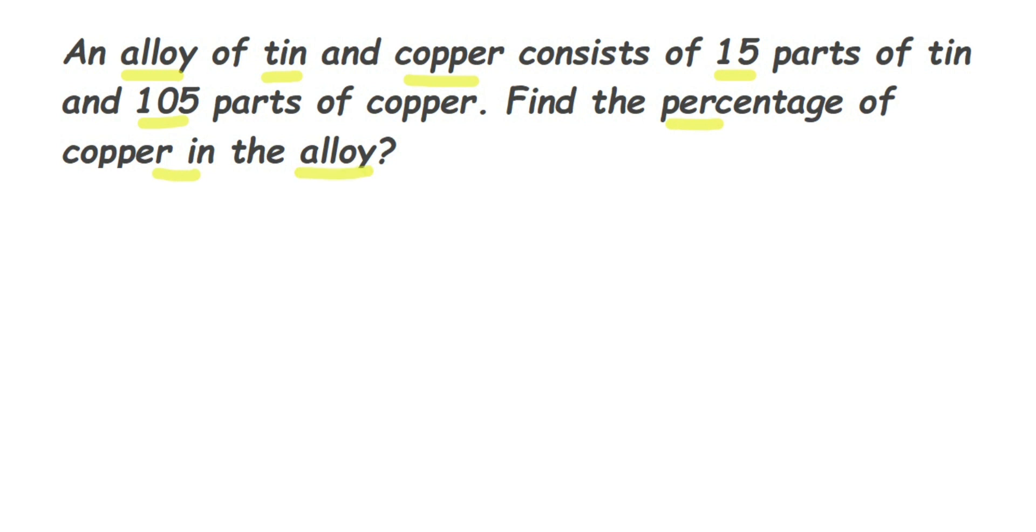If you see, tin is 15 parts and copper is 105 parts. So total we have to first find out. So let us first write down what we know from the question. So, okay, so given, so here I am going to write down.